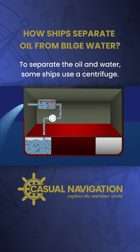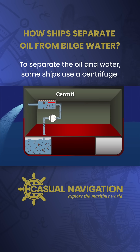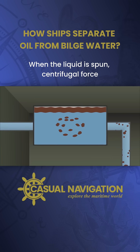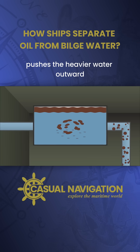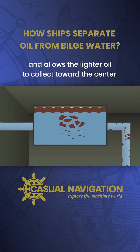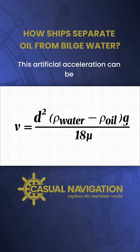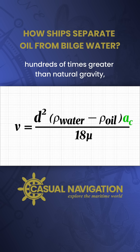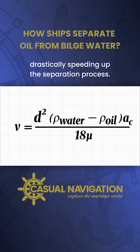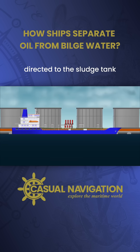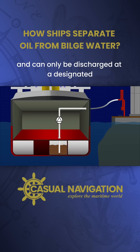To separate the oil and water, some ships use a centrifuge. When the liquid is spun, centrifugal force pushes the heavier water outward and allows the lighter oil to collect toward the centre. This artificial acceleration can be hundreds of times greater than natural gravity, drastically speeding up the separation process. The oil collected in the centre is then directed to the sludge tank and can only be discharged at a designated reception facility when the ship reaches port.